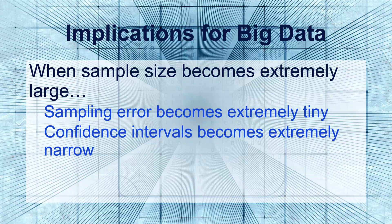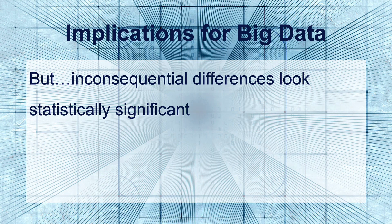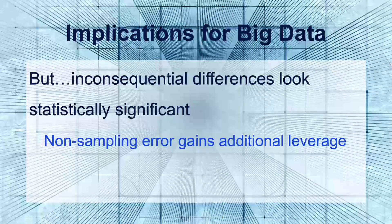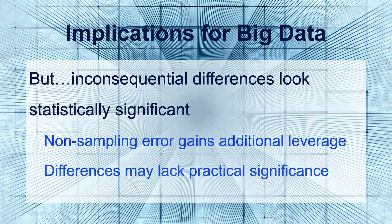Those confidence intervals are going to become extremely narrow, and the margin of error becomes extremely small. The problem is type 1 errors — every difference is going to look statistically significant. With an extremely large sample size, even inconsequential differences look statistically significant. Your non-sampling error gains additional leverage, and any tiny amount of random variability could influence your interpretation. Differences that are statistically significant may lack practical significance, leading you to make costly changes that don't actually benefit in a real-world way.